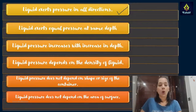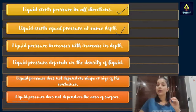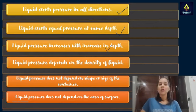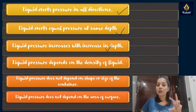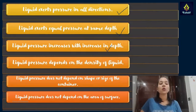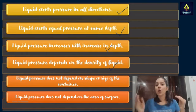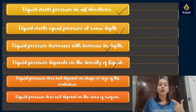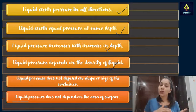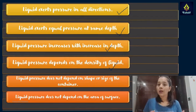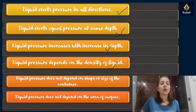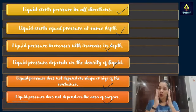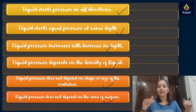Summarizing what we have concluded: liquid exerts pressure in all directions — shown by the balloon experiment. It exerts equal pressure at the same depth — shown when the manometer showed the same reading at a fixed depth. Liquid pressure increases with increase in depth. Liquid pressure depends on the density — honey has greater density and greater pressure; gasoline and cooking oil have less density and less pressure. Liquid pressure does not depend on the shape, size, or area of the container.